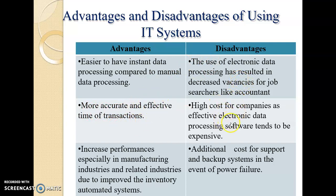Another advantage is more accurate and effective transaction processing. However, a disadvantage is the high cost for a company to acquire software, because software typically changes annually and the company must keep it up to date. A further advantage is increased performance especially in the manufacturing industry due to improved automated inventory systems, whereas a disadvantage is the additional cost to support and maintain backup systems in the event of power failure.